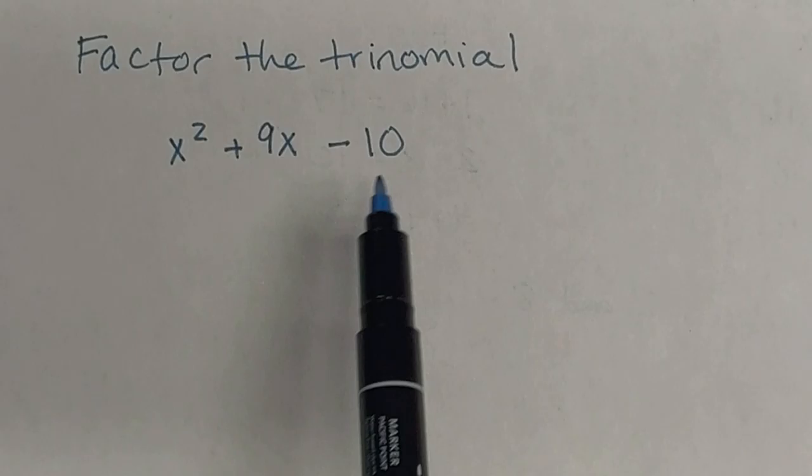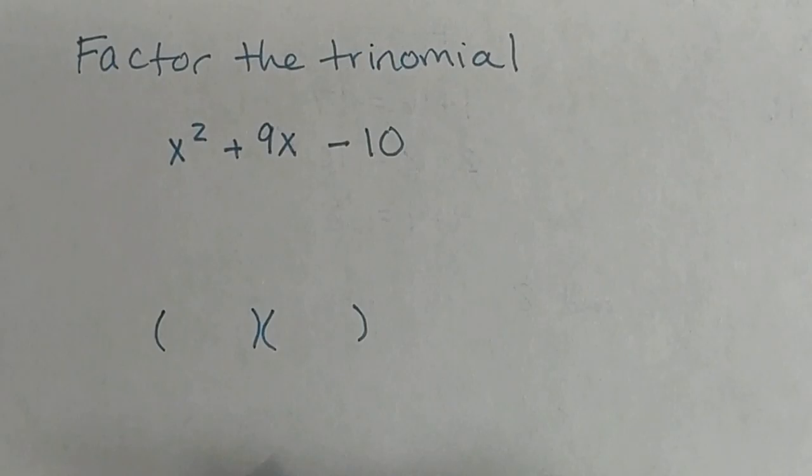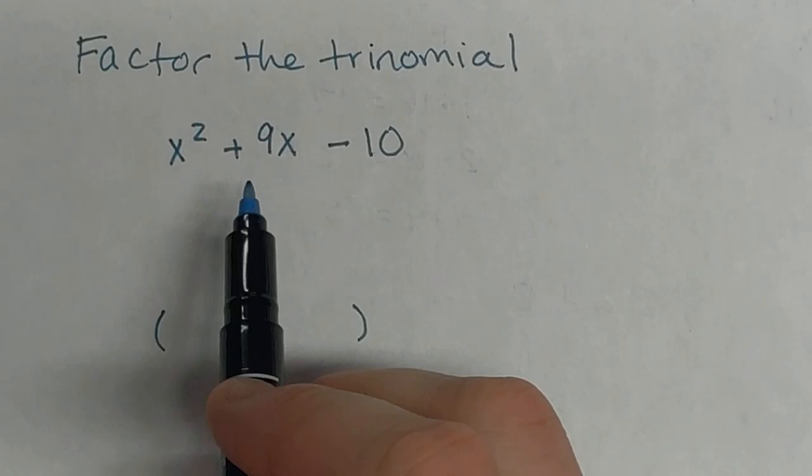Factoring means we're taking our original trinomial and figuring out our final answer that ends up as two sets of parentheses.